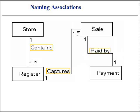Association names should start with a capital letter, since an association represents a classifier of links between the class instances. In the Unified Modeling Language, classifiers should start with a capital letter.